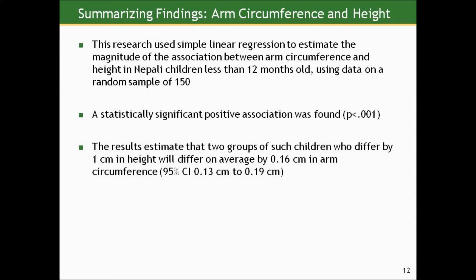To summarize: this research used simple linear regression to estimate the magnitude of the association between arm circumference and height in Nepali children less than 12 months old, using data on a random sample of 150. A statistically significant positive association was found. The results estimate that two groups of such children who differ by 1 centimeter in height will differ on average by 0.16 centimeters in arm circumference, with a 95% confidence interval of 0.13 to 0.19 centimeters.